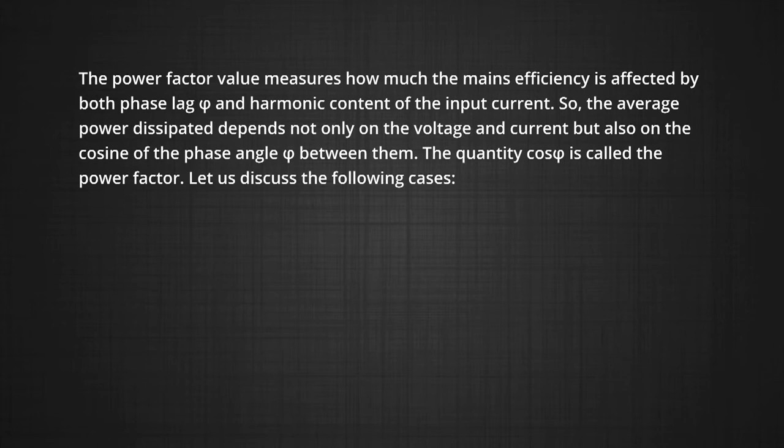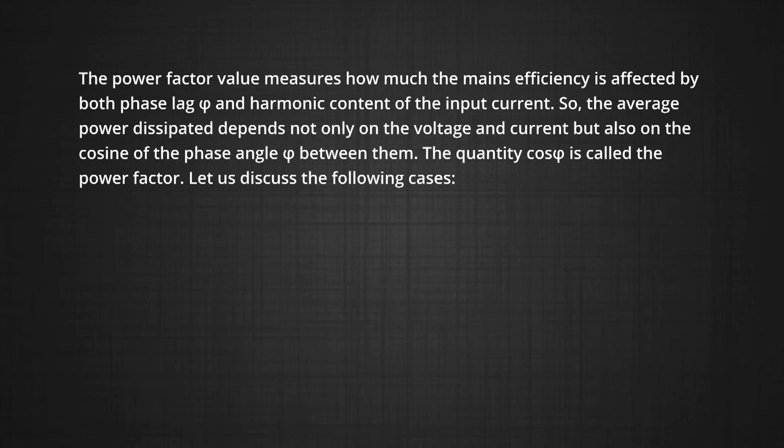Let us discuss the following cases for the power factor. Case 1, resistive circuit. If the circuit contains only pure R, it is called resistive circuit. In that case phi equals zero and cos phi will be one. So there is maximum power dissipation.